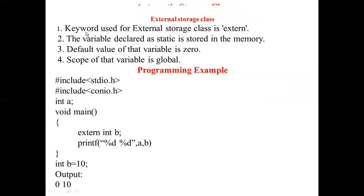External keyword, external value — zero. Static memory, scope is global. In int a — global variable. External int — external variable. From the bottom, you have a local variable, but the local area.